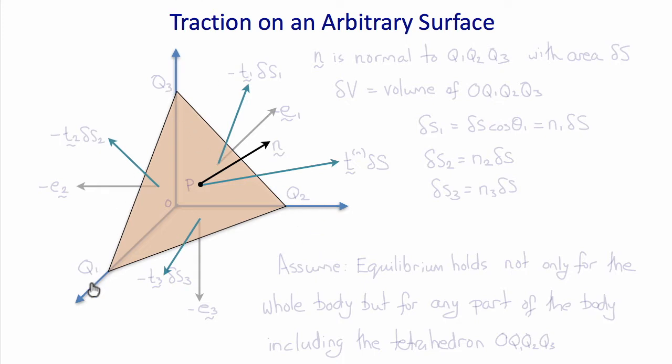Today let's consider tractions acting on an arbitrary surface at point P with vertices q1, q2 and q3 on our x1, x2 and x3 axes. The traction acting normal to the surface is t superscript n and multiplying that by the area of the surface delta s will be the force. n is the outward normal to the surface.